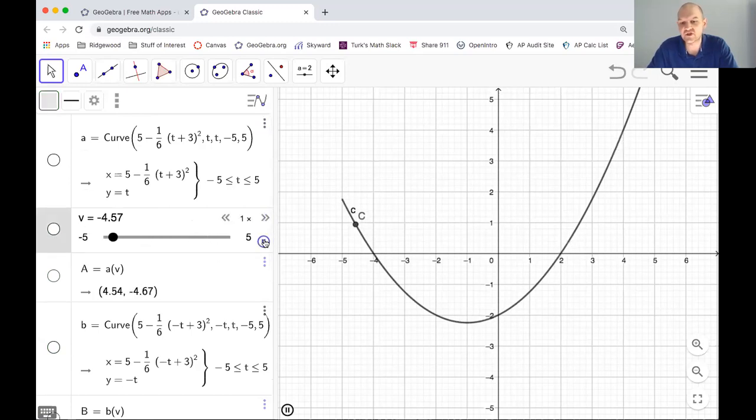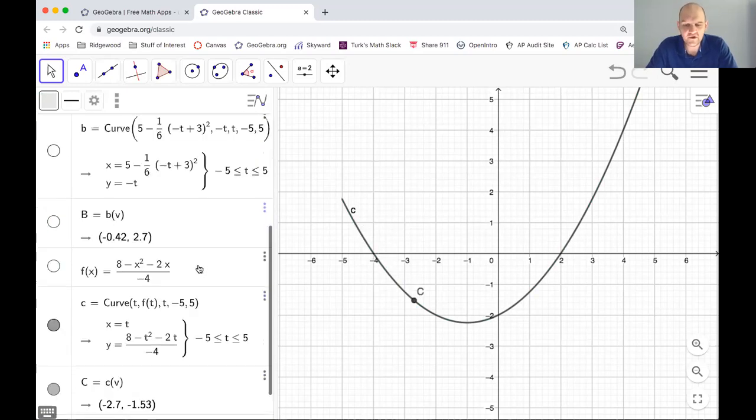I'm going to turn that off and I'm going to say curve T, comma, F of T. That's what happens when you plug T into F of X, you get F of T. T is the parameter. I'm going to go from like negative 5 to 5 and I'm going to put a point on that. So C of V. Let's move our slider back to negative 5. So if I hit play, it's going to move to the right, which is what I was expecting.